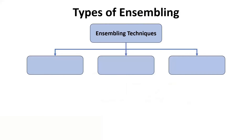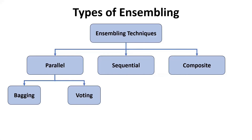Now let's understand with the help of a proper mind map what broad categories or options are available within ensembling. There are three broad categories. The first set represents the parallel ensembling techniques. The second set is sequential. And the third one is a composite or hybrid, which is a mix of both parallel and sequential. Within parallel ensembling techniques, there are two broad categories: bagging and voting-based techniques.